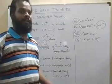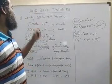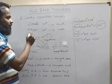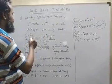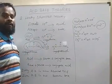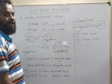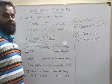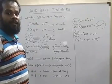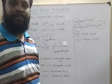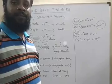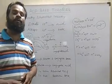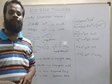So now we are clear about Lowry-Bronsted acids and bases. If the substance donates H plus, it is called acid. If it accepts H plus, then it is called base. Donor of H plus is acid, acceptor of H plus is base according to Bronsted acid-base theory. Now let us discuss the next theory — Lewis theory.